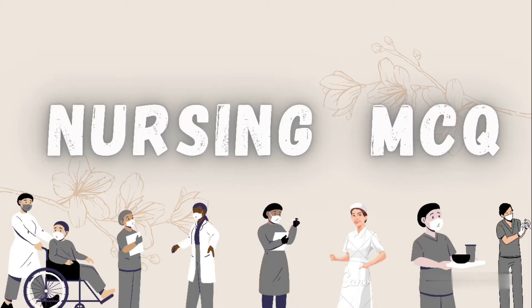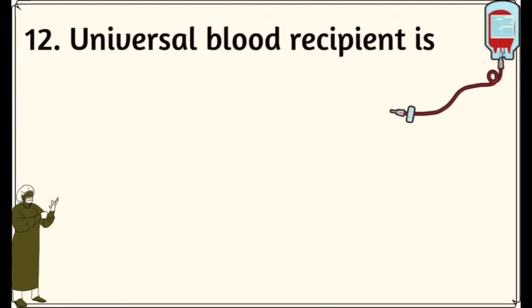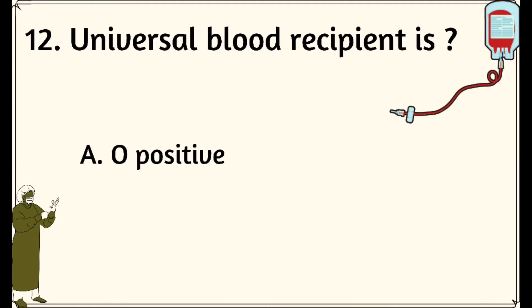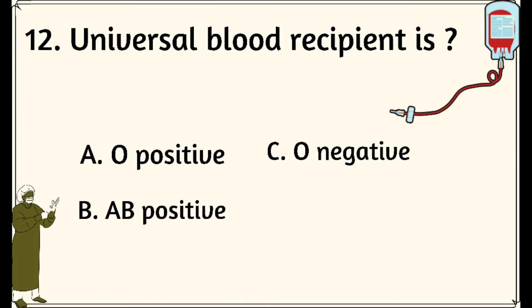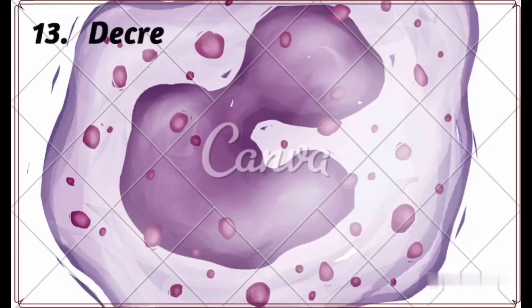Question number 12: Universal blood recipient is — Option A: O positive, Option B: AB positive, Option C: O negative, Option D: AB negative. The right answer is Option B: AB positive.